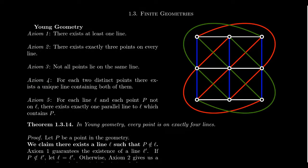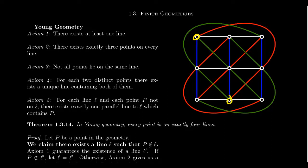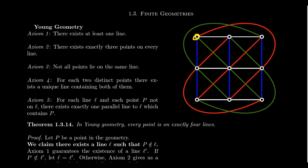Let's keep a fixed point and check axiom 4. For any other point I choose, there's a unique line connecting them — a blue line, a green line, a red line, depending on which point we select. I did this just for one corner point, but replicating the process for the other eight points shows the same pattern. There's a lot of symmetry here. Every pair of points has exactly one line containing them.